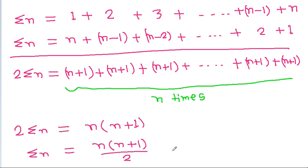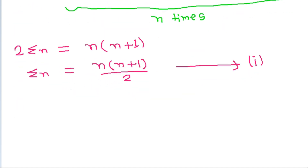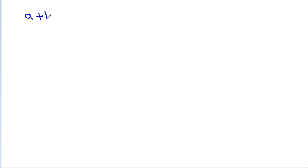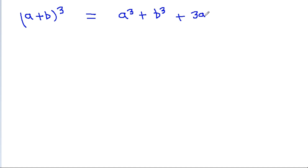This completes the proof of the first part. Now, for the second part, we use the identity: (a+b)³ = a³ + b³ + 3a²b + 3ab².